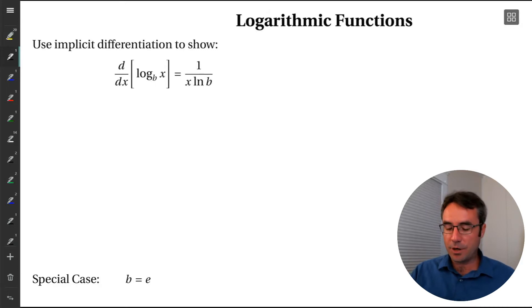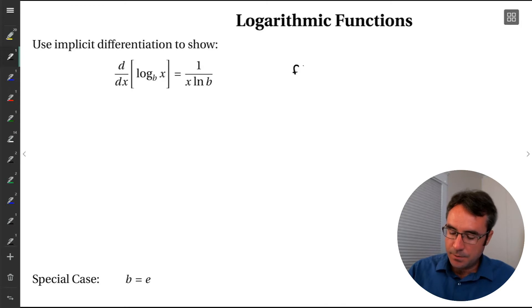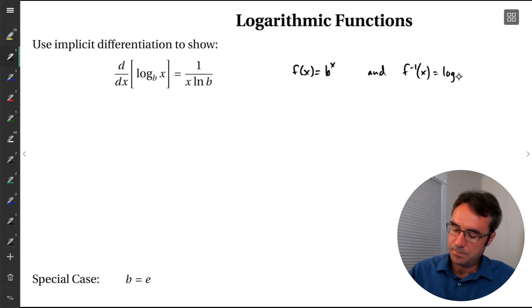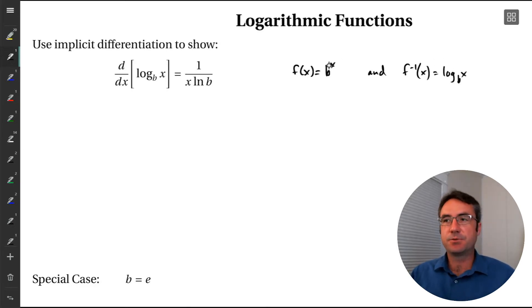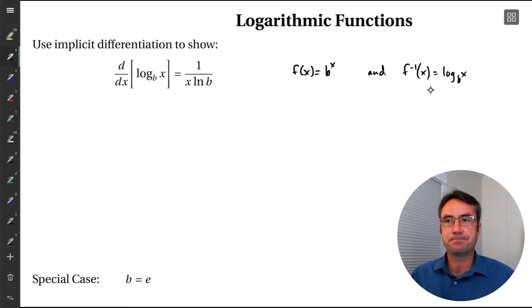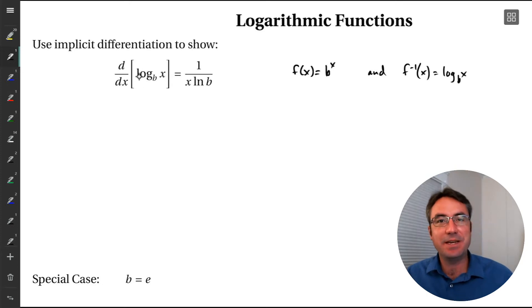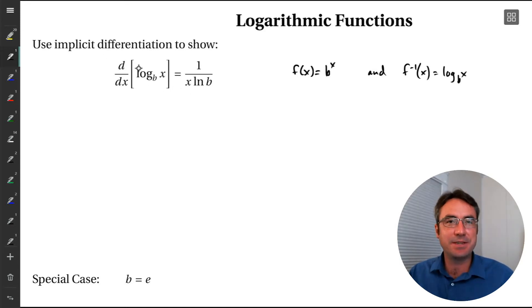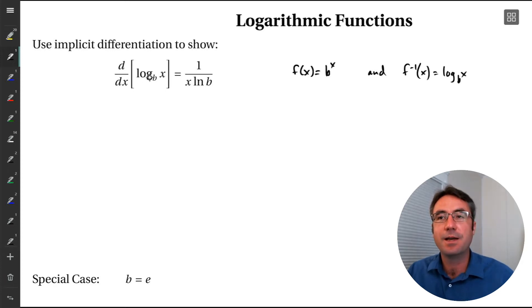To get this started, we're going to first recognize that when we say log base b, we're really talking about an inverse function. Log base b of x is really the inverse function of the exponential b raised to the power x — these are really inverse functions of each other. So we're differentiating an inverse function, and the way we prove this formula is using implicit differentiation, similar to what we did for inverse sine and inverse tangent.